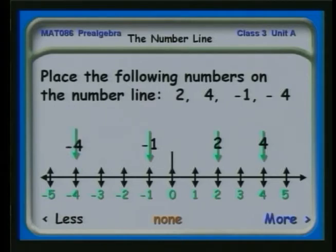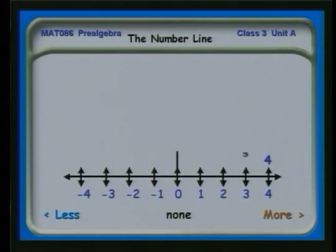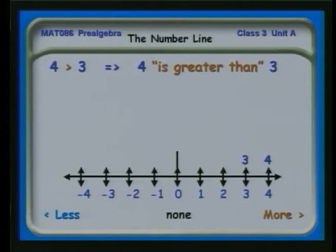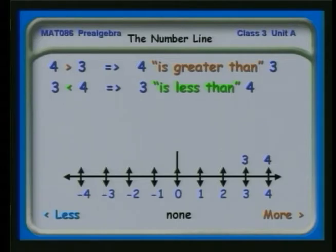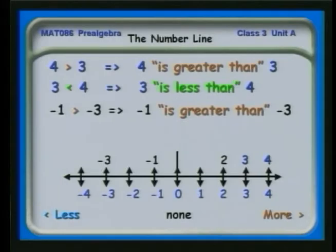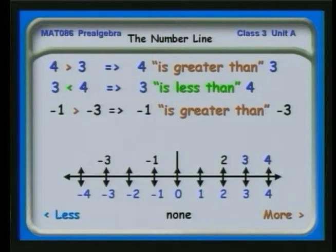Now we can talk about what numbers are greater than or less than others. As you go from left to right on the number line, the numbers go up in value. There's a four, there's a three. Since three is to the left of four, we say four is larger than three — four is greater than three. Three is less than four, to flip the inequality around. Now, if we have a two and a minus one and minus three, we can say that minus one is greater than minus three. Why? Because if I owed someone a dollar, I would have more money than if I owed them three dollars. Mathematically, minus three is to the left of minus one on the number line, so numbers to the left are smaller, numbers to the right are larger.